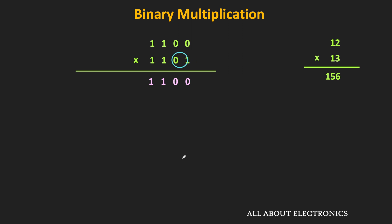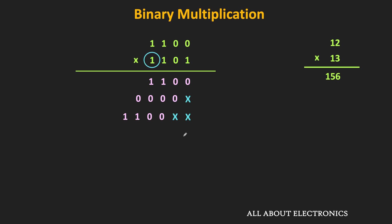Then if we move to the next bit, that is equal to 0. Since it is 0, the partial product will also be equal to 0, but it will be left shifted by 1 bit position. After that, if we move to the next bit, that is equal to 1. So the next partial product will be same as the multiplicand — that is 1100 — but left shifted by 1 bit position. And finally, looking at the MSB of the multiplier, that is also equal to 1. So the partial product will again be same as the multiplicand but left shifted by 1 bit position. So in this way, we got all the partial products.